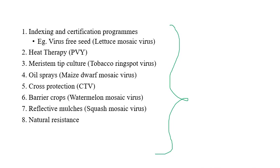The different types of conventional approaches available for managing plant viral diseases include: first, indexing and certification program; second, heat therapy; third, meristem tip culture; fourth, oil sprays; fifth, cross protection; sixth, barrier crops; seventh, reflective mulches; and finally, natural resistance.